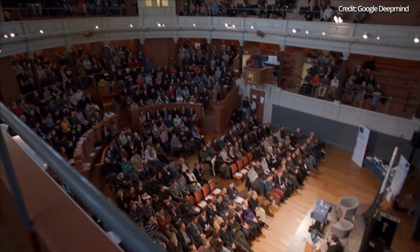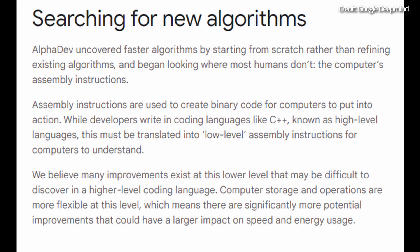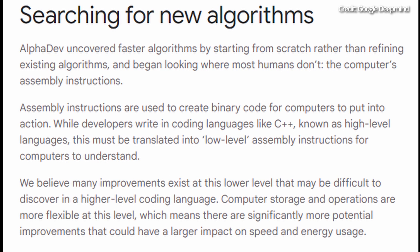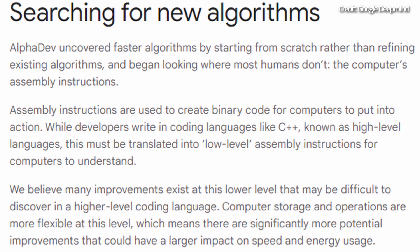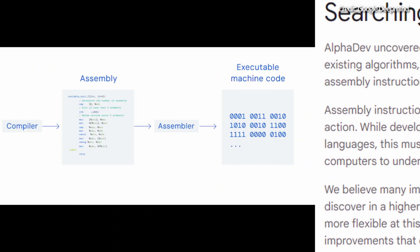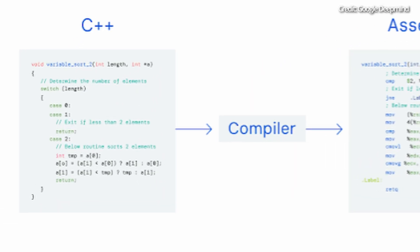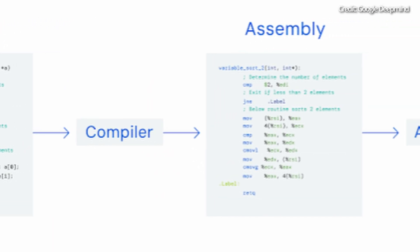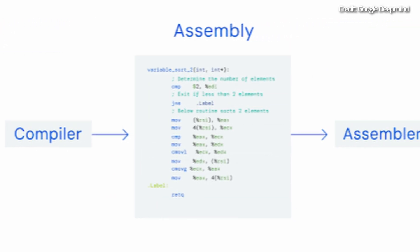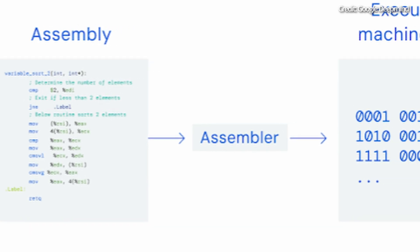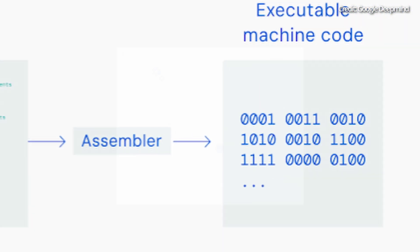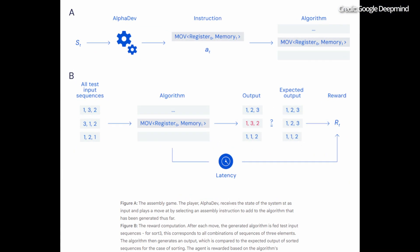Drawing from AlphaZero's inspiration, AlphaDev is now a strategic player in the world of assembly instructions. These low-level instructions, which the CPU executes, are AlphaDev's playground. The AI system engages in an assembly game, meticulously constructing algorithms while ensuring correctness and efficiency. This process involves a rigorous check against expected results, rewarding the AI for both accuracy and speed.